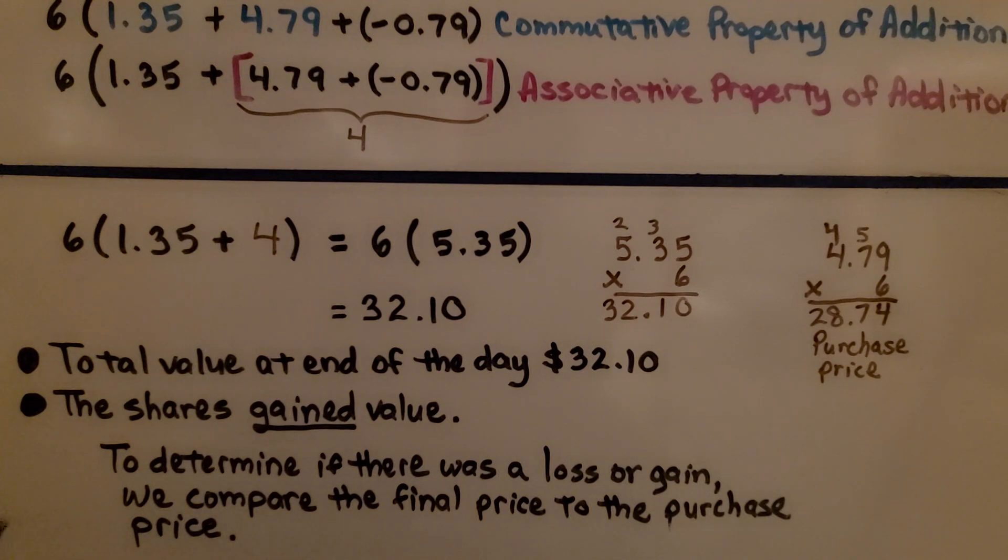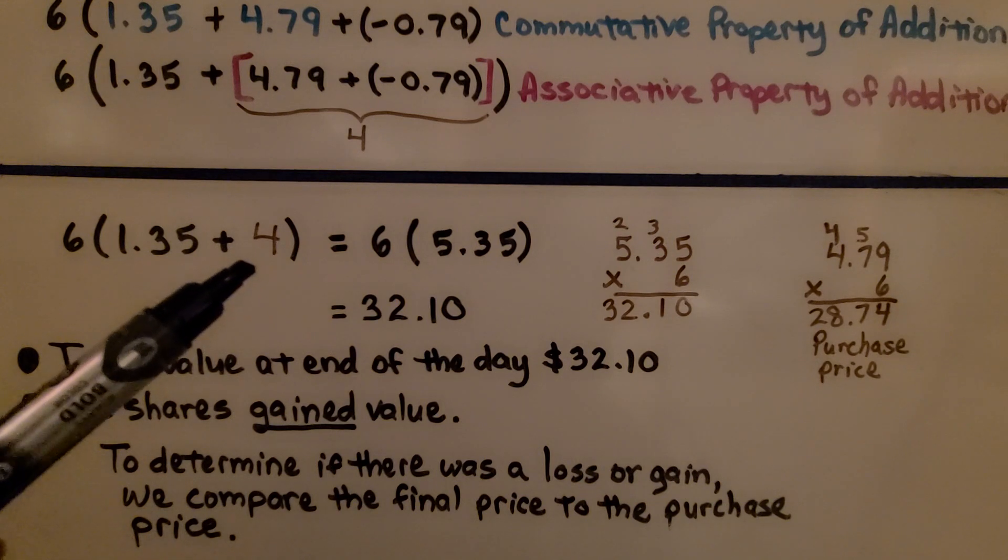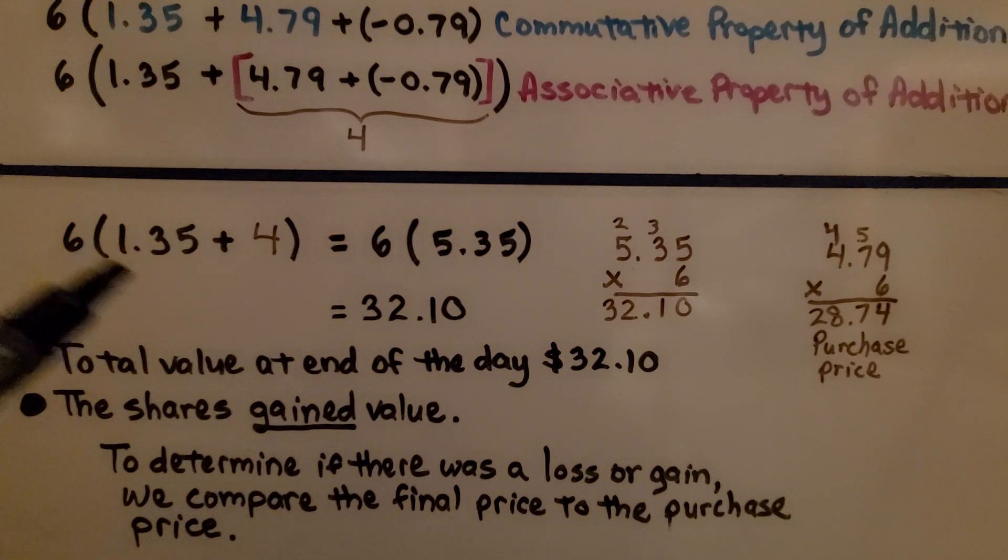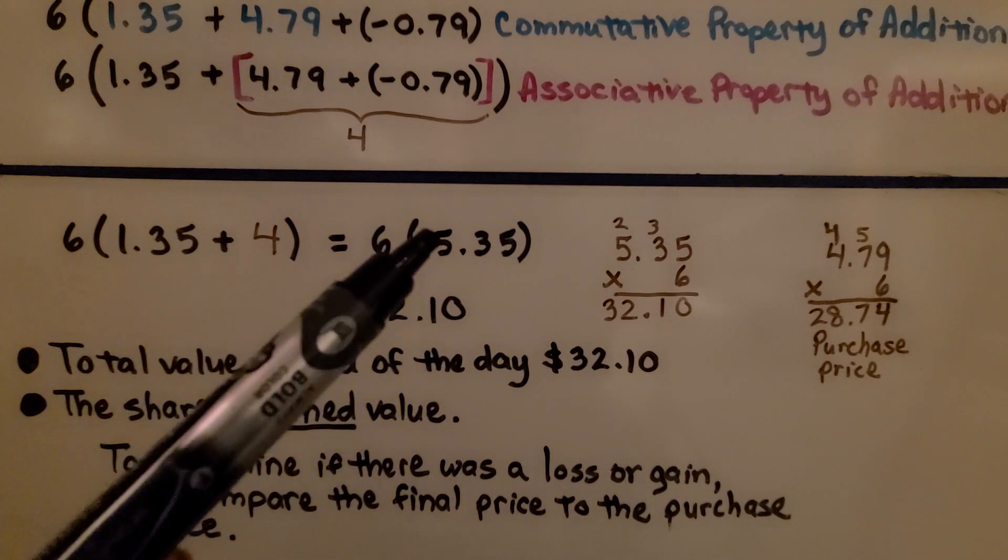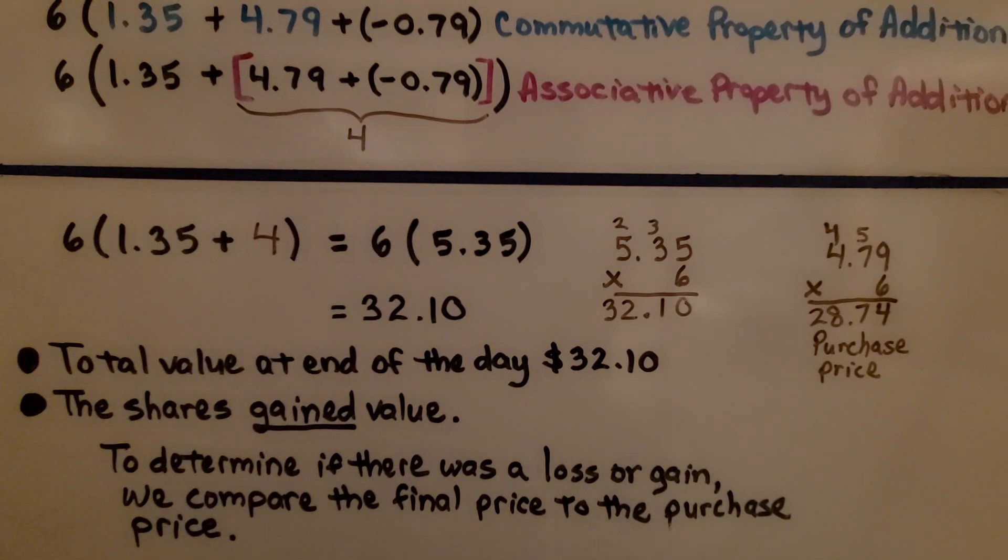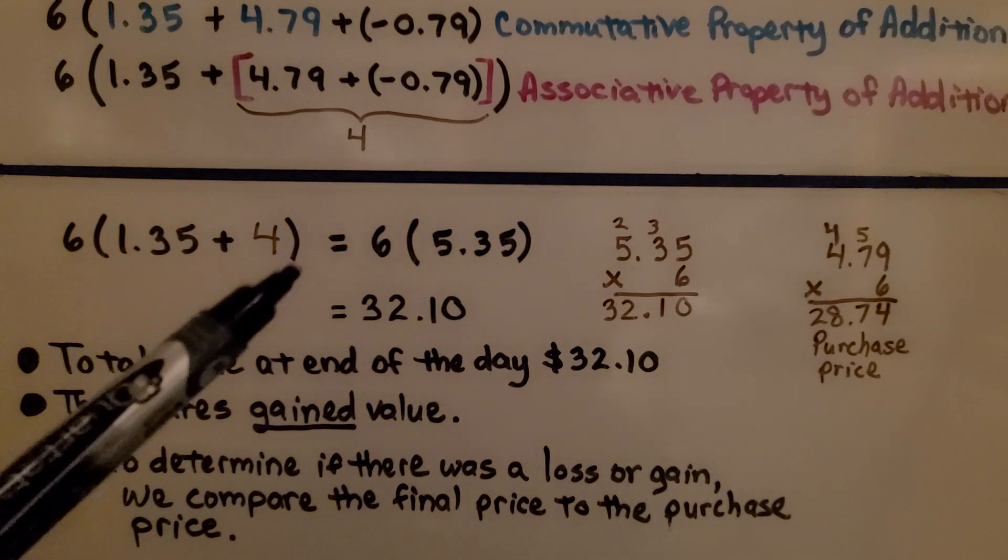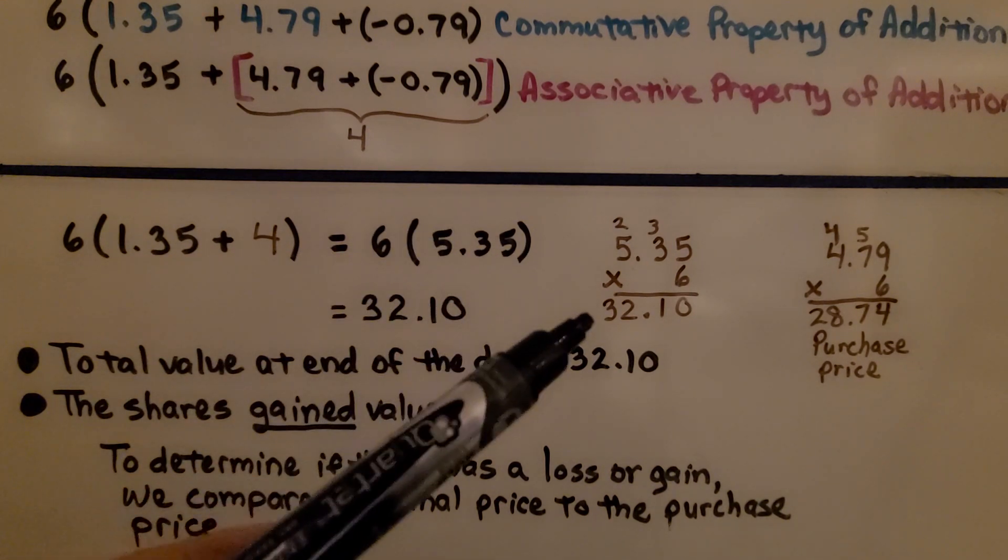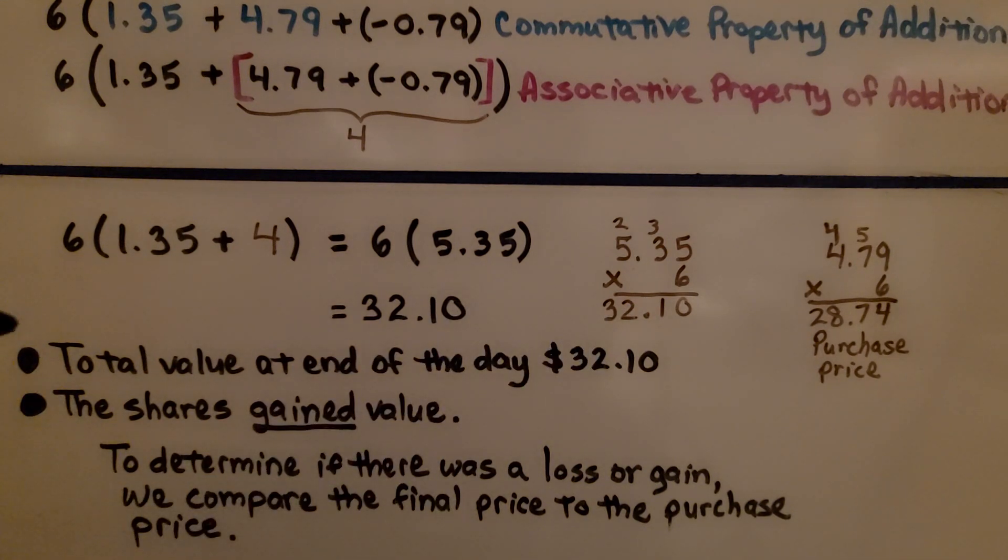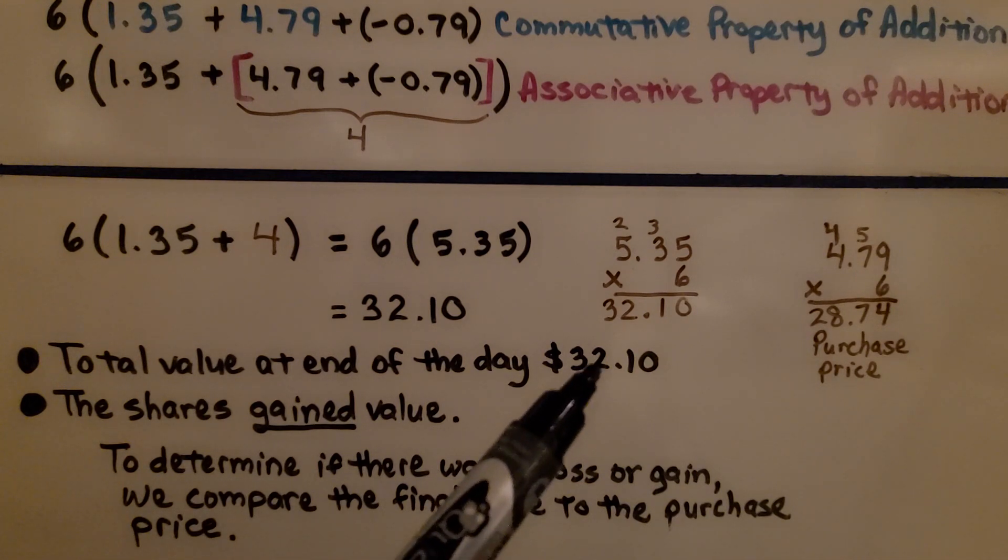By doing that, we're left with 6 times $1.35 plus 4. We can add this one whole to this four whole and get $5.35. We have 6 times $5.35. We multiply it, we get $32.10. The total value at the end of the day of her 6 shares is $32.10.